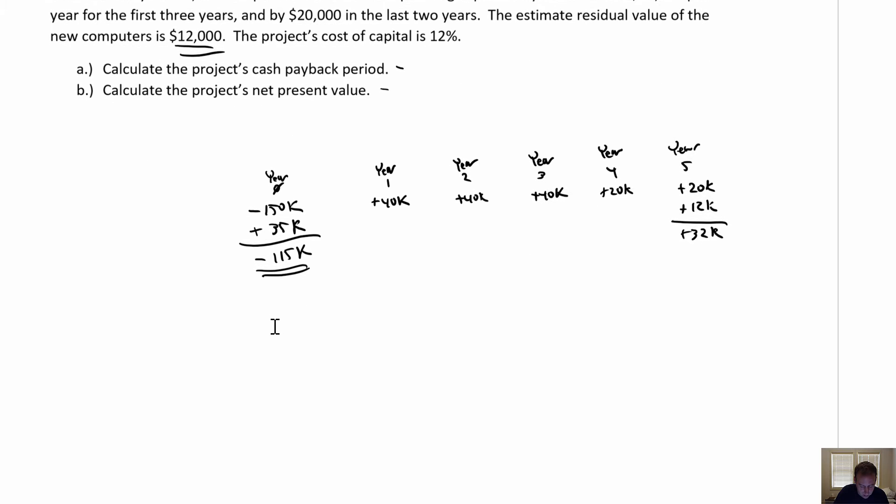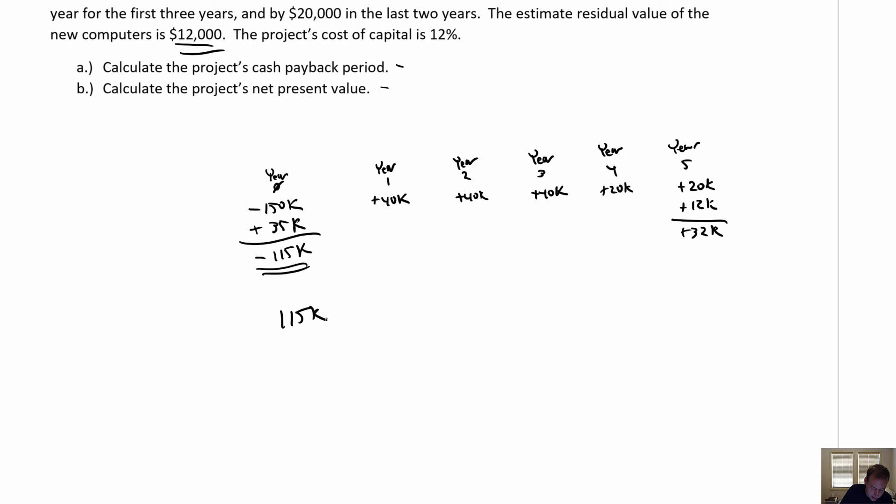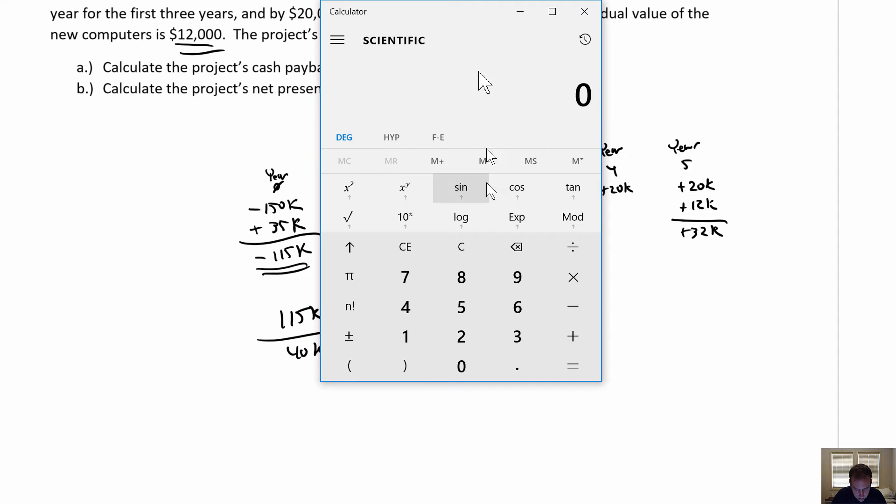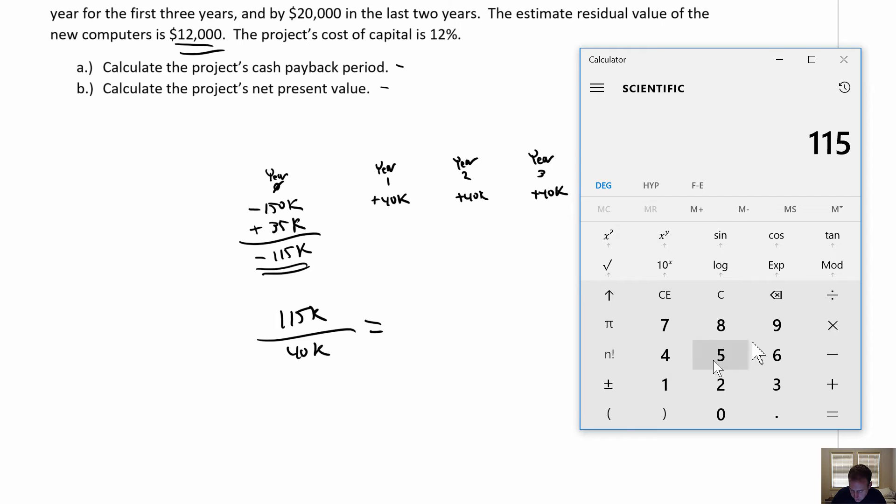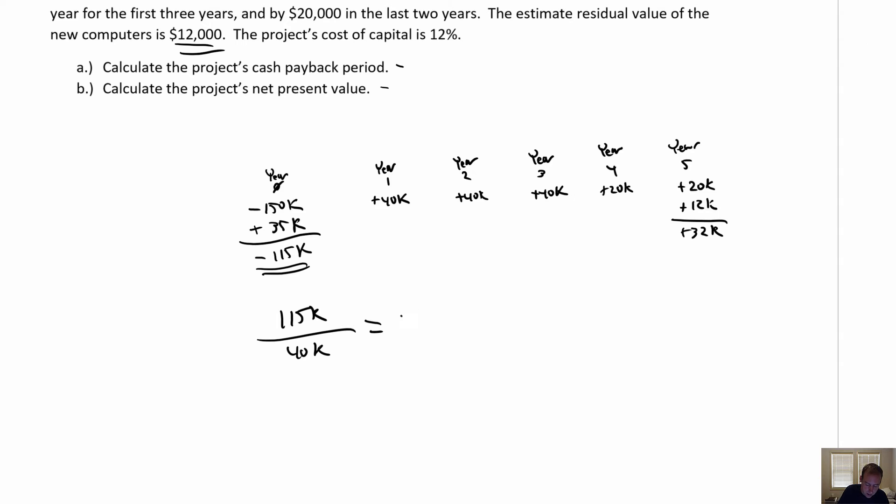Now, the math here would be pretty simple. You just go, okay, $115,000, my investment, divided by my annual receipts. Now, luckily, it was all the same. So I can just divide by 40. But otherwise, you would have to kind of just go through year by year. But here, since they're all the same, I can just say, okay, $115,000 divided by 40. Call up my old calculator here. Oh, my goodness. $115,000 divided by 40 is 2.875.